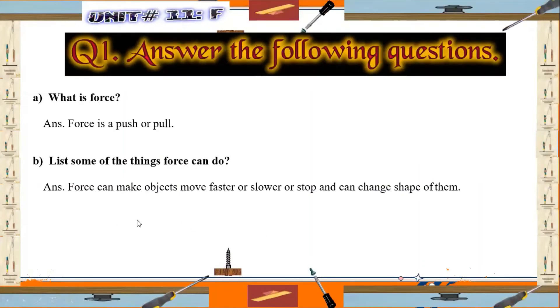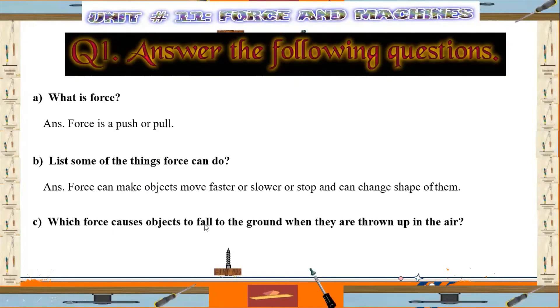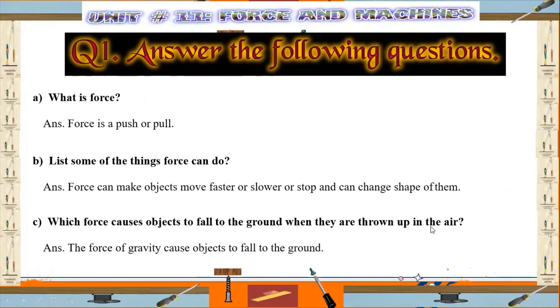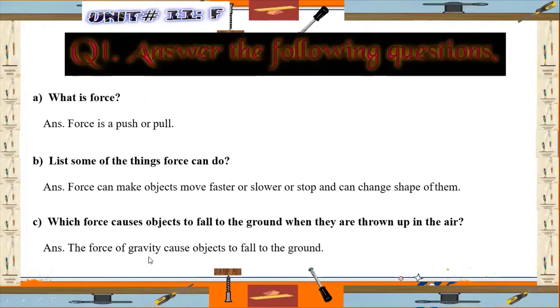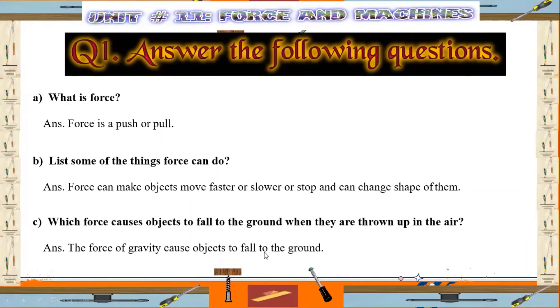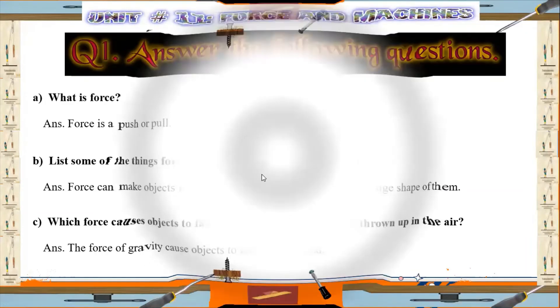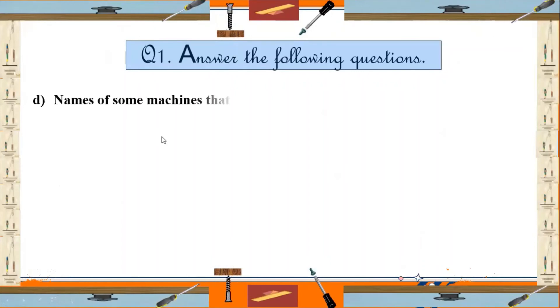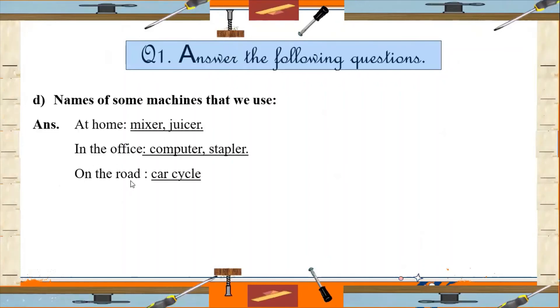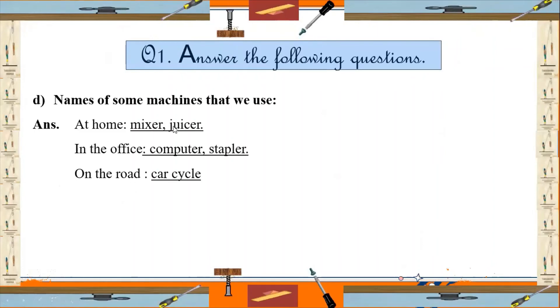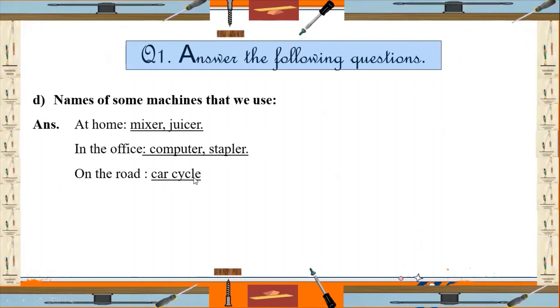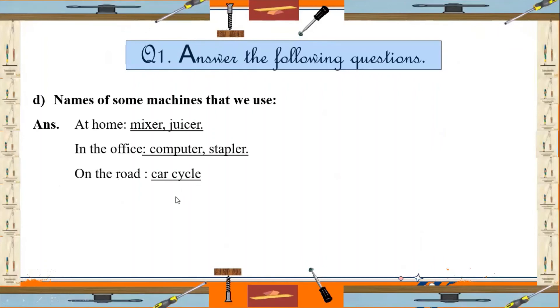Now see part C: Which force causes objects to fall to the ground when they are thrown up in the air? Students, it's the force of gravity. What is it? Force of gravity causes objects to fall to the ground. Now D part is about names of some machines that we use at home, in the office, or on the road. At home we are using mixer, juicer, blender, iron, so many other things you can write. In office: computer, stapler, printer. On the road: car, cycle, bikes - other things you can write as well.